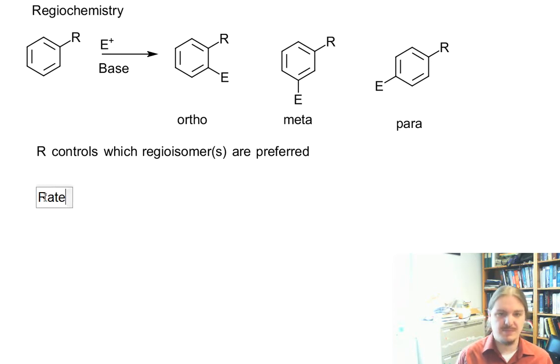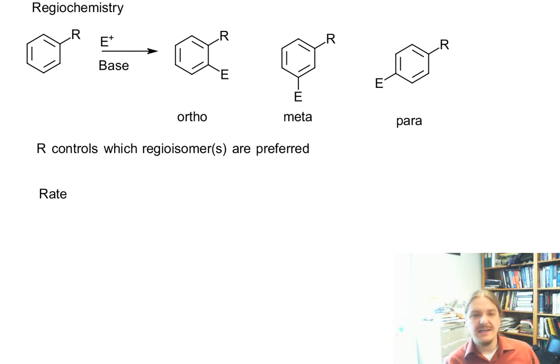Another outcome has to do with the relative rates of reactions. And in this case, I'm going to talk about some specific kinds of cases. One is, you know, let's put a nitro group on here. Nitro group is one of everybody's favorite electron withdrawing groups.